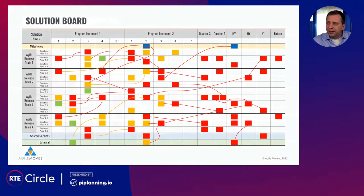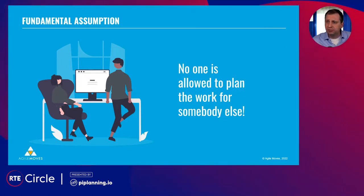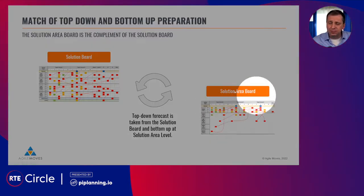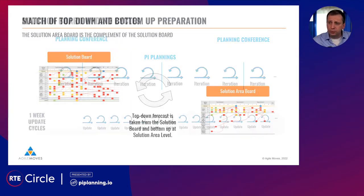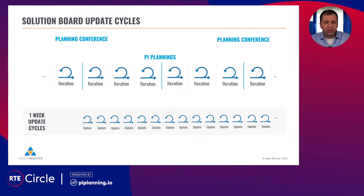No one is allowed to plan the work for someone else — this is an unwritten law in SAFe, and it applies to large systems too. The teams within the solution area drive the backlog and drive the solution board. We do this in weekly update cycles, so every week we have an aligned understanding of all the solution areas working in the solution train, represented by the solution board.